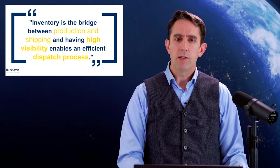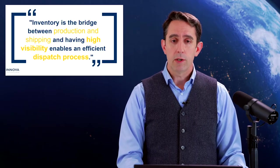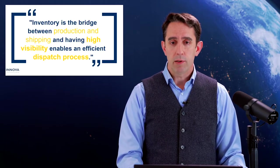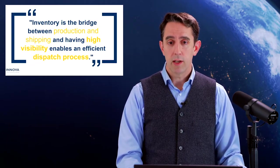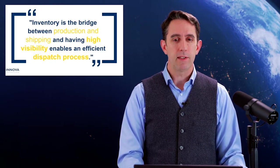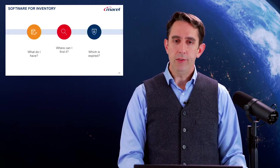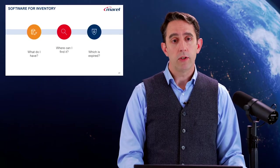It's always good to hear about real-world scenarios. Let's take a moment to review before we move on. Inventory is the bridge between production and shipping, and having high visibility enables an efficient dispatch process. Steve the shipper needs to have high visibility over Peter the producer's production in order to have an efficient dispatch process and maintain a high customer service level. In this section, we will explore how we can use software to fulfill this mission.